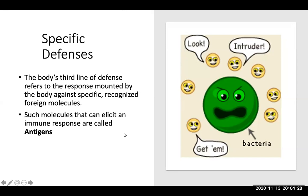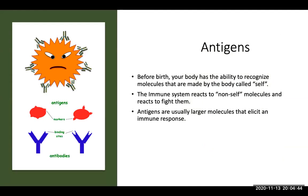Specific defenses are the body's third line of defense, referring to the response mounted by the body against specific, recognized foreign molecules. Such molecules that can elicit an immune response are called antigens. Before birth, your body has the ability to recognize molecules made by the body called self, and the immune system will always react to non-self molecules and fight them. Antigens will usually be larger molecules that elicit this immune response.